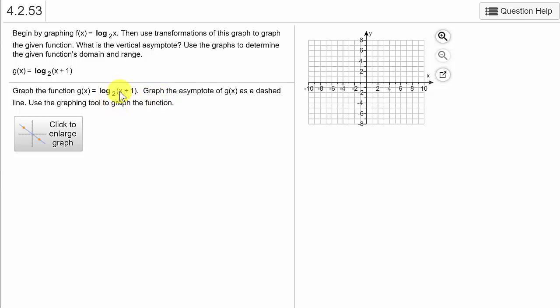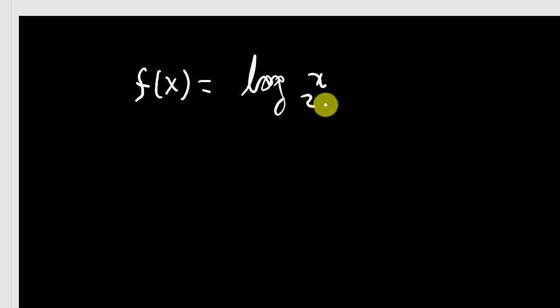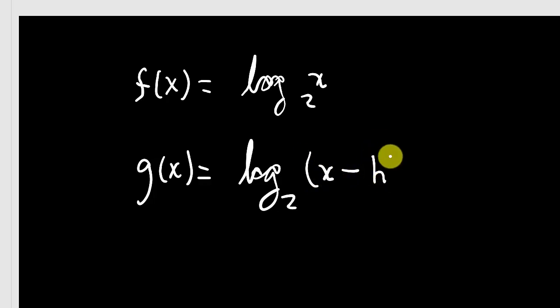You can see here how we have x plus 1 inside the parentheses. We know that's going to shift the graph. If we have f(x) equal to log base 2 of x, and we write that as g(x) equal to log base 2 of (x plus or minus h), and then outside the parentheses we've got plus or minus some number k.